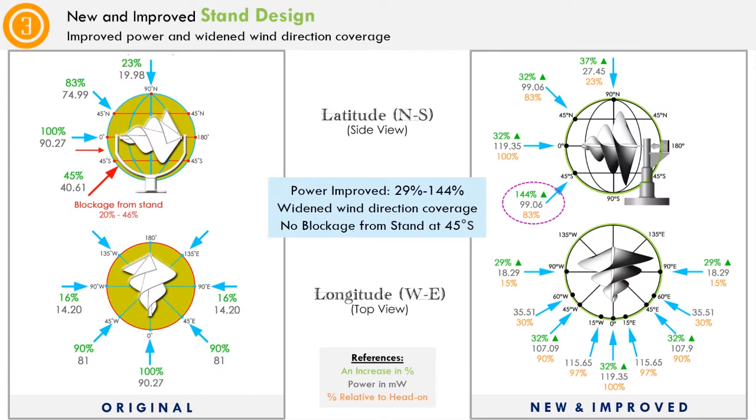Number three, the new and improved frontless stand design. Improved overall power between 29 and 144% in all latitude and longitude testing, mainly from the wind direction 45 degrees south.